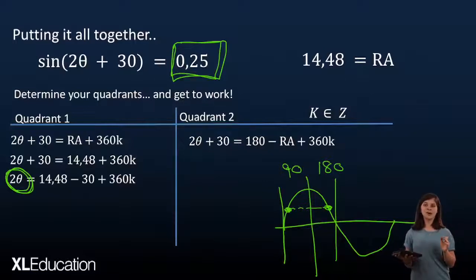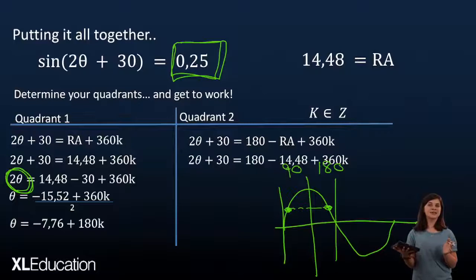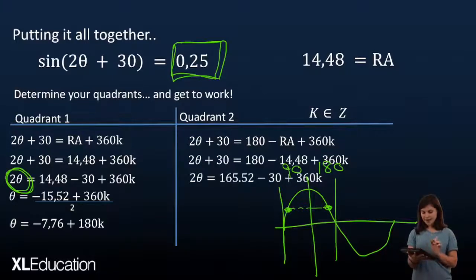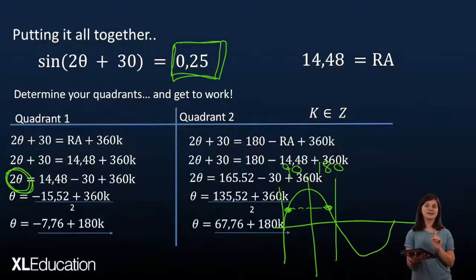Now, the reason why we do this is because we know from our grade 10 and 11 concepts that when we've got sine of 2 theta, that means that we're compressing 2 revolutions in what would usually be the space of 1. So, we're now adding 180k because we've divided 360 by 2 because that angle is going to be seen 180 degrees later. Fantastic. So, now we see that our one angle is negative 7.76 plus 180k. We're going to do the exact same thing for our second quadrant. And we're going to see that our theta equals 67.76 plus 180k.